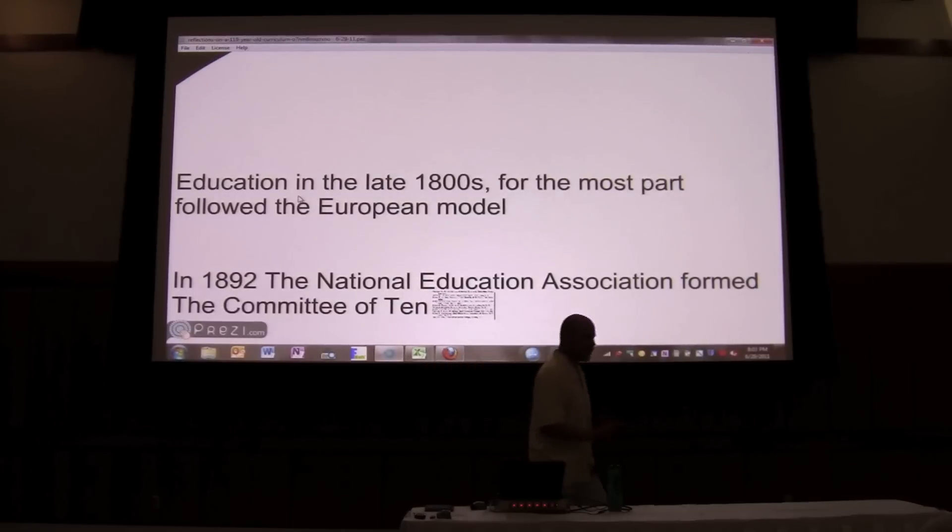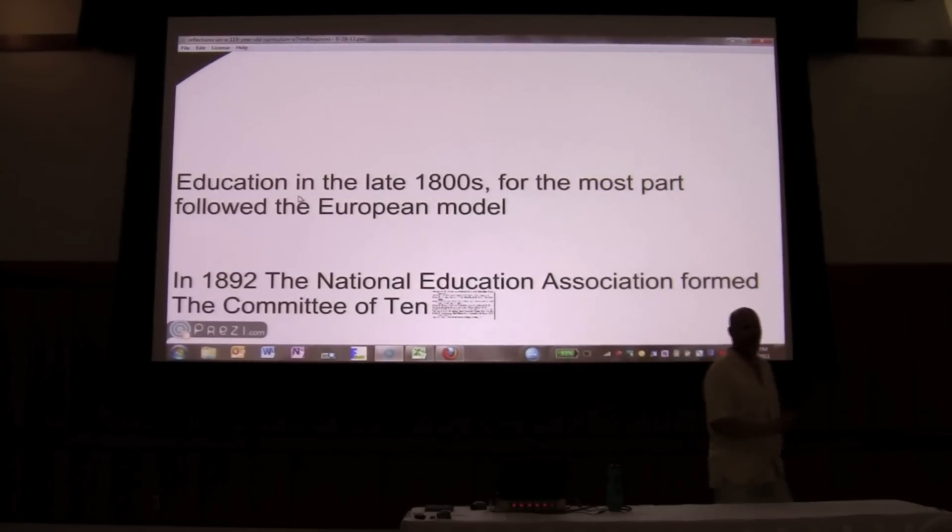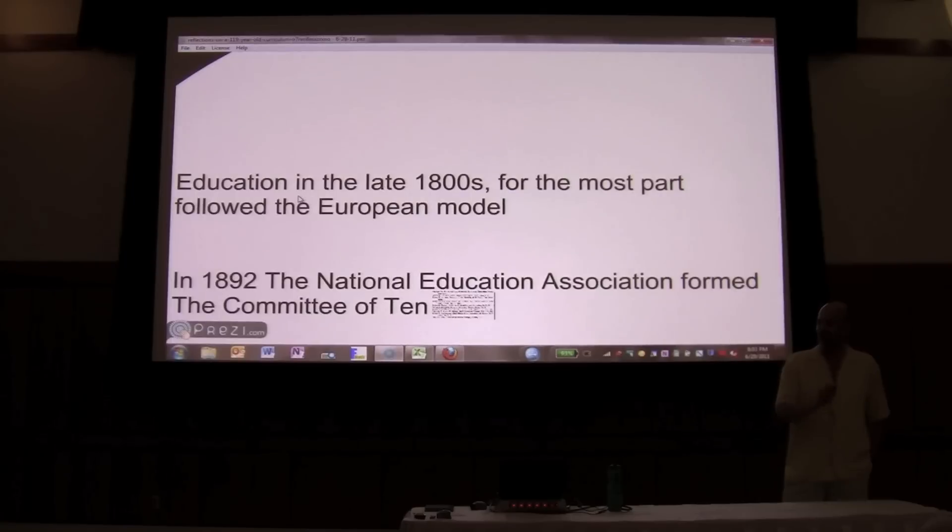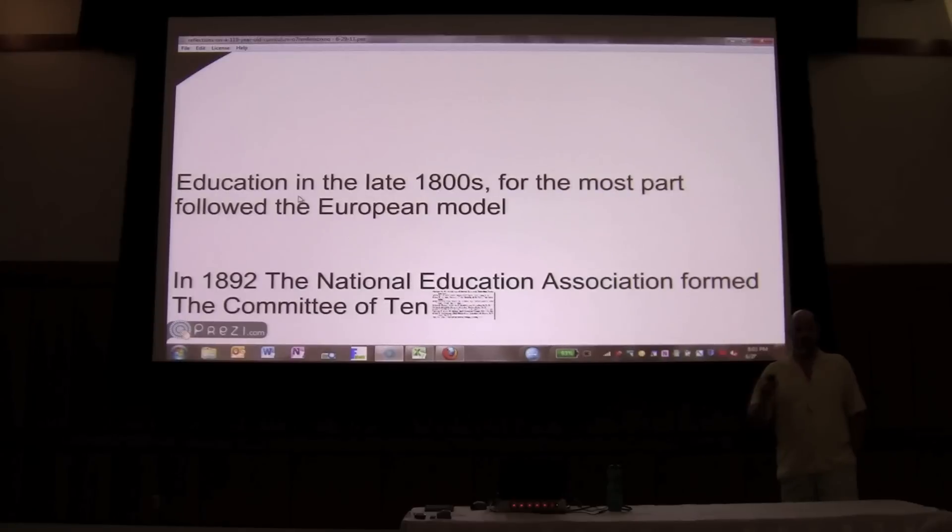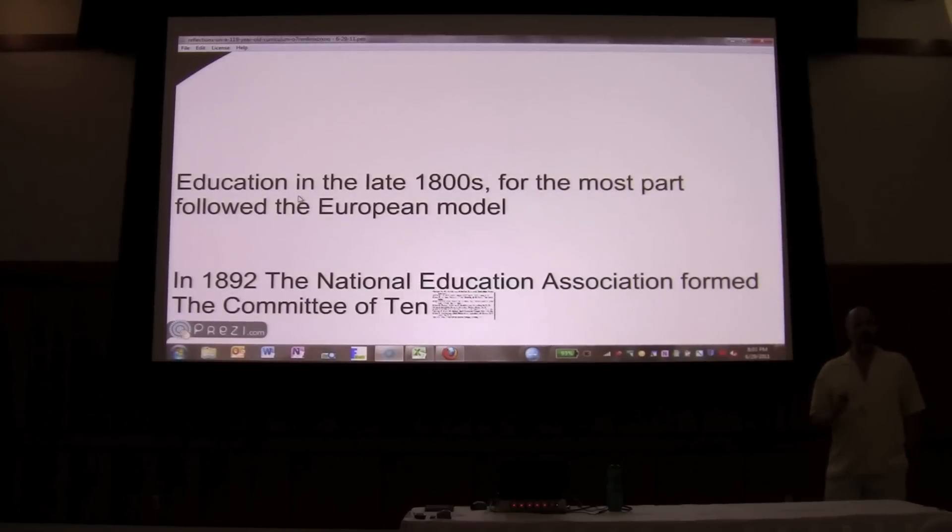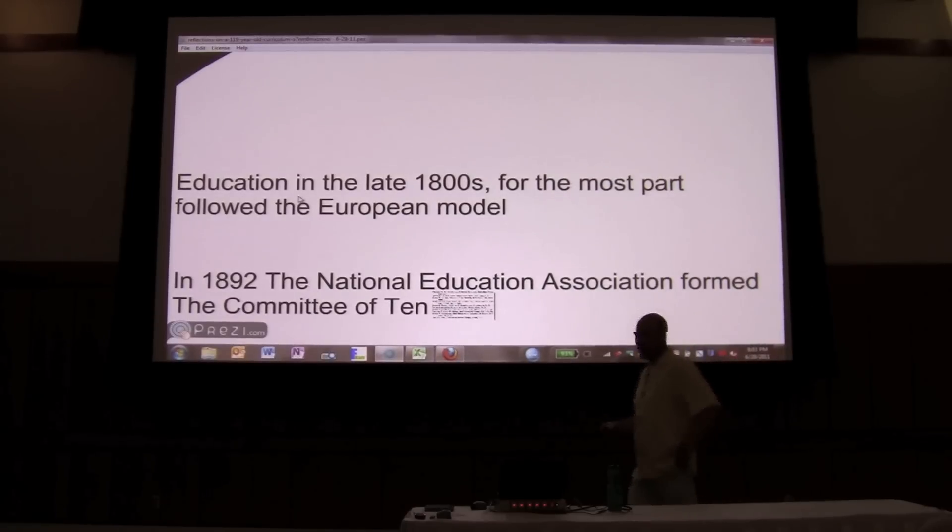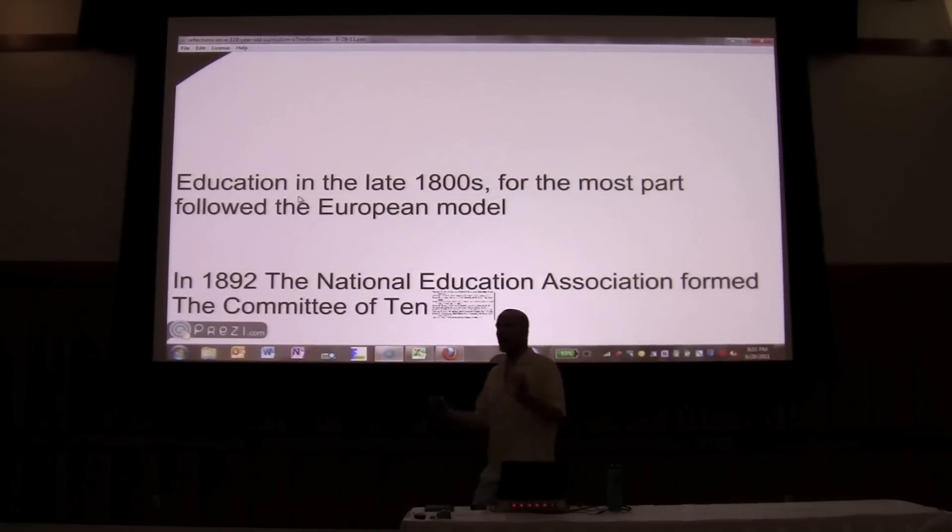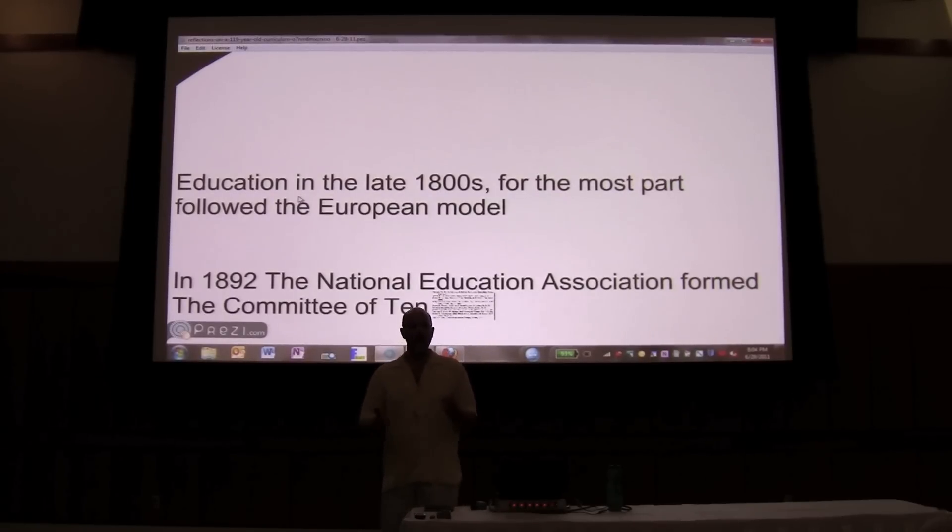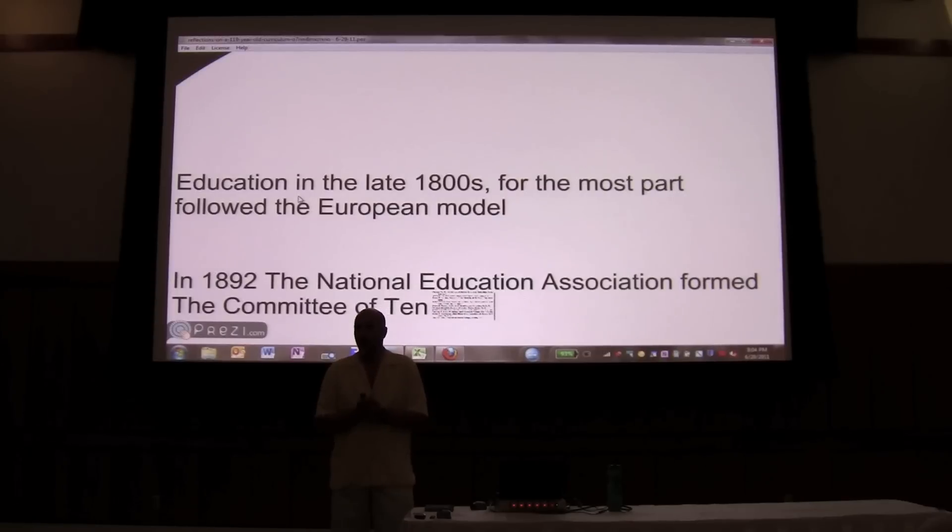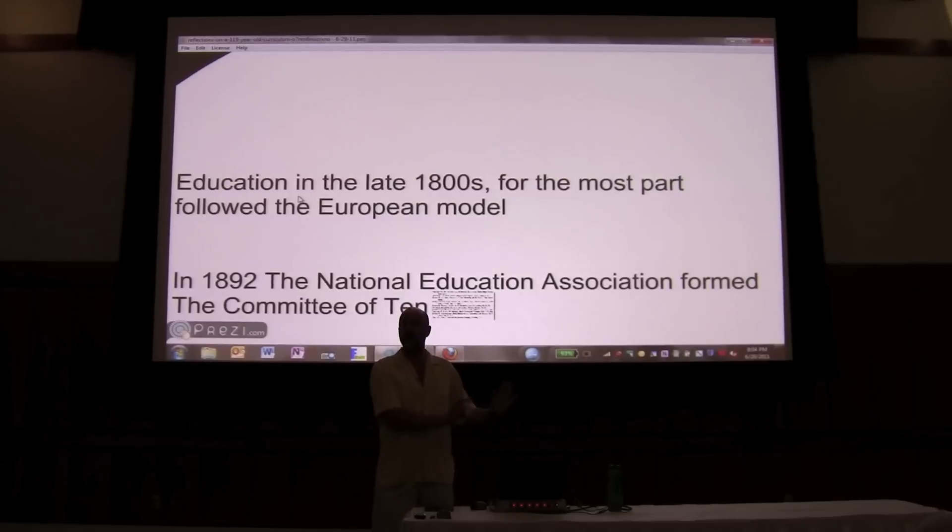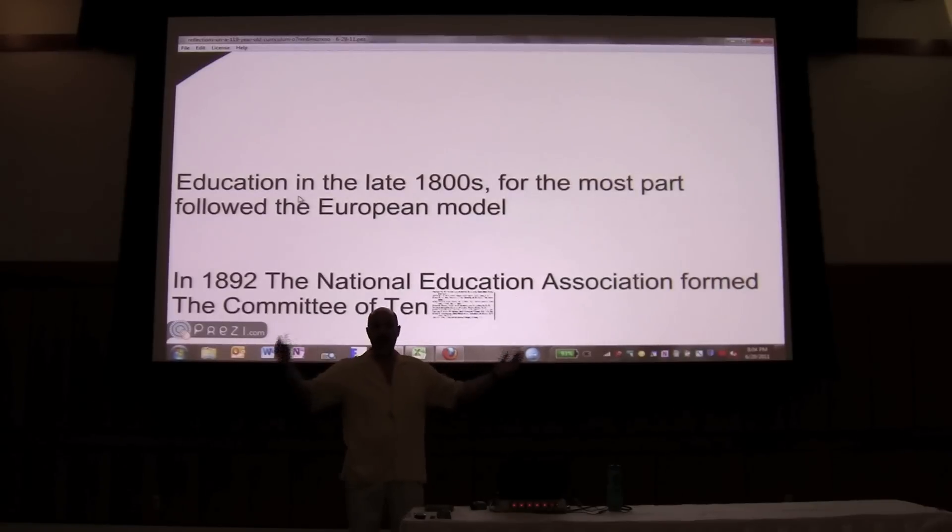The third document that I'd like to show, coincidentally, also comes from 1892, exactly 119 years ago. This is about the first standards movement in the United States. Education, in the late 1800s, for the most part, followed the European model for secondary education. That included that in the 10th grade, you would make a choice. That system of education that I'm about to describe is used still for most of the European system and actually in most of the world for secondary education.